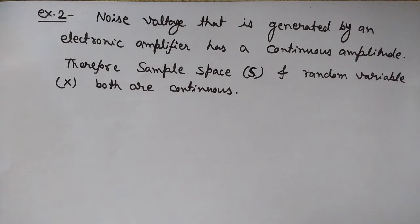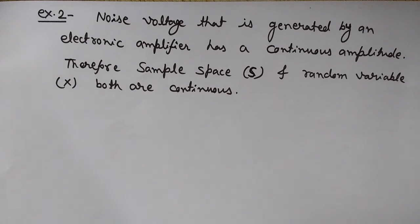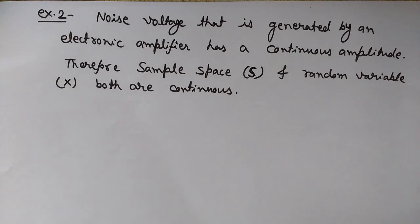So that was all about random variables and their types — continuous random variables and discrete random variables. In the next video we will see the cumulative distribution function (CDF) and the probability density function (PDF). Keep watching Engineering Made Easy.